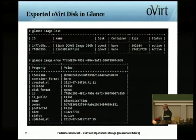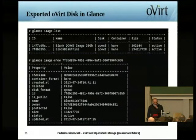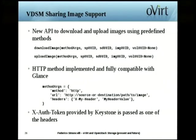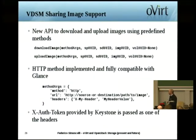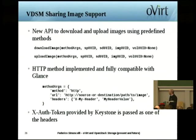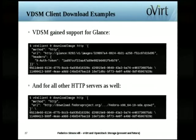In Glance, the result looks like a regular image, with some metadata maintained such as the name. This is based on VDSM support for sharing images added specifically for Glance, but it can be leveraged for other image transfer methods. We have two new APIs in VDSM — download image and upload image — and we can issue different methods for the transfer. One of these methods is HTTP, which is the one used for Glance, and we can also specify additional headers. This way we gain support both for Glance and for other HTTP servers.